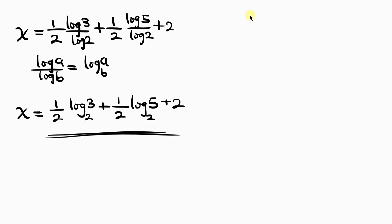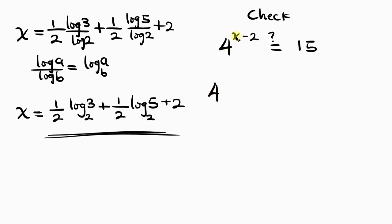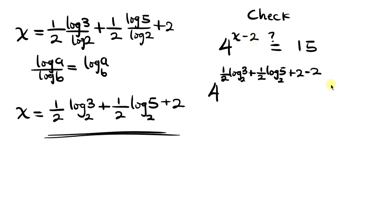Let's check to see if our answer is correct. We're given 4^(x−2) = 15. Substituting x, we have 4 raised to [(1/2)·log₂3 + (1/2)·log₂5 + 2 − 2], equal to 15. The +2 and −2 cancel, leaving 4 raised to [(1/2)·log₂3 + (1/2)·log₂5].